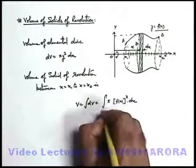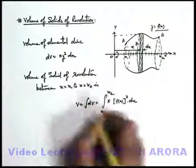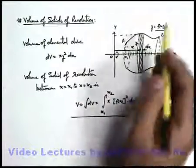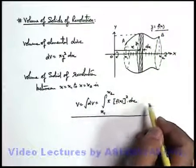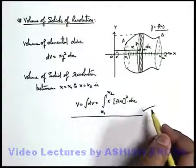And it'll be integrated within limits from x1 to x2. So whatever function you are given, you just substitute the value of function and correspondingly on integrating you'll get the volume of solid of revolution.